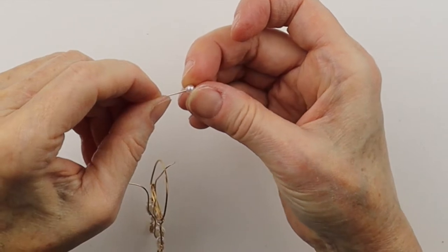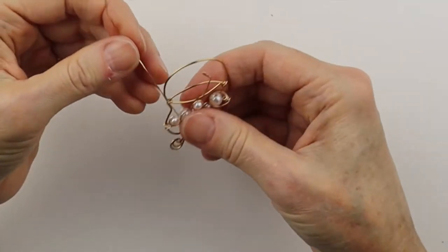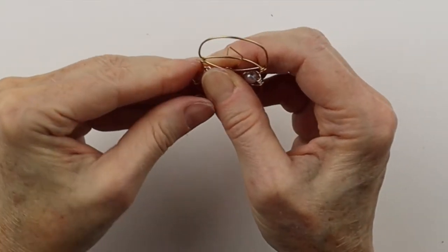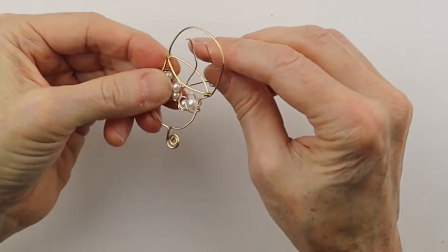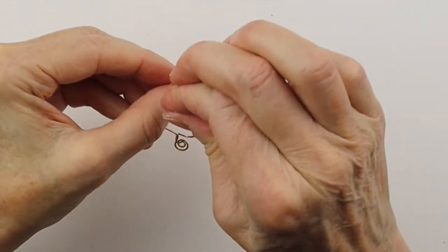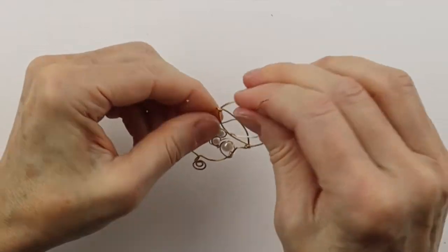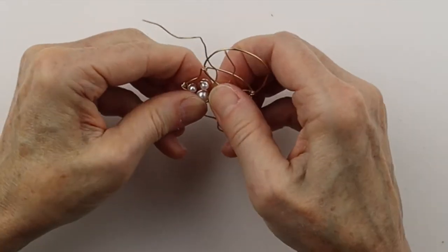If you want to put another bead on there you can. Wind the wire around it and then bring it up through the top of the cauldron. So we have a couple of wires sticking up here.